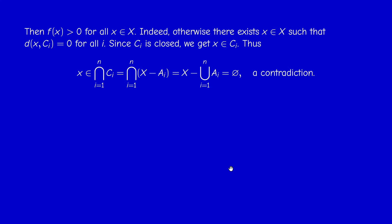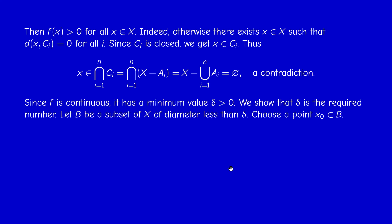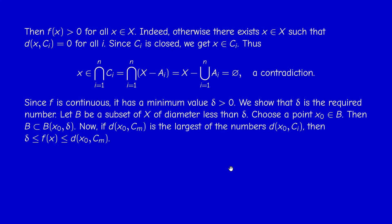Since F is strictly positive and X is compact, F attains a minimum value, which is also strictly positive. Call this minimum value delta. Now take a subset B of X whose diameter is less than delta, and choose a point x_0 in B.